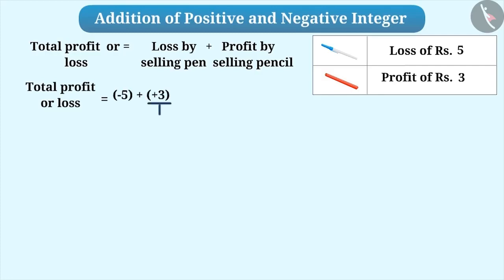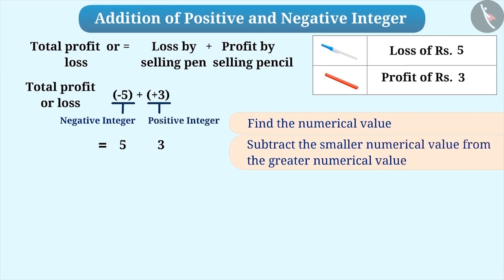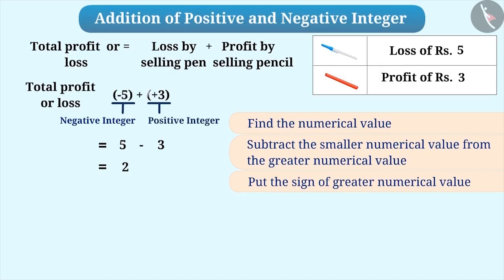In such a situation, when one value is a positive integer and the other a negative, we will find the numerical value of the integers ignoring their signs. Here, 5 is the numerical value of minus 5 and 3 is the numerical value of plus 3. Then we will subtract the smaller numerical value from the greater numerical value. We get 2, and we will prefix the sign of the greater numerical value with the result. Hence, the result of minus 5 plus plus 3 will be minus 2. It shows that the shopkeeper faces a loss of Rs.2.